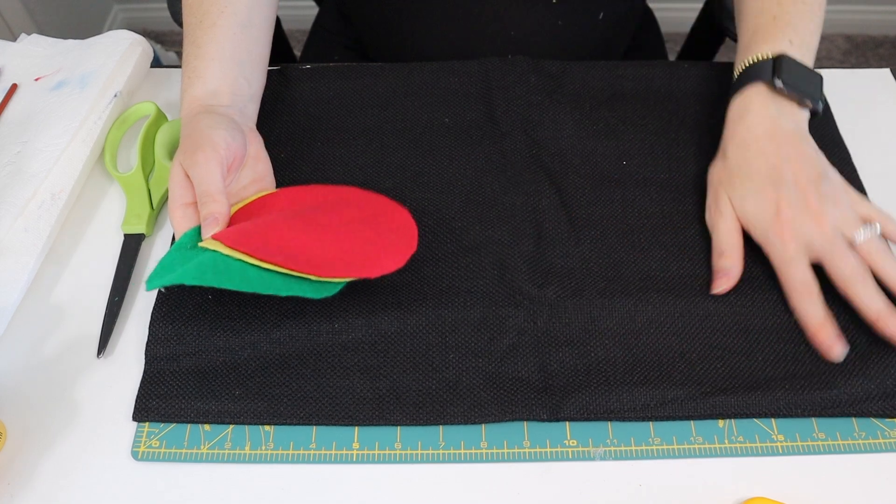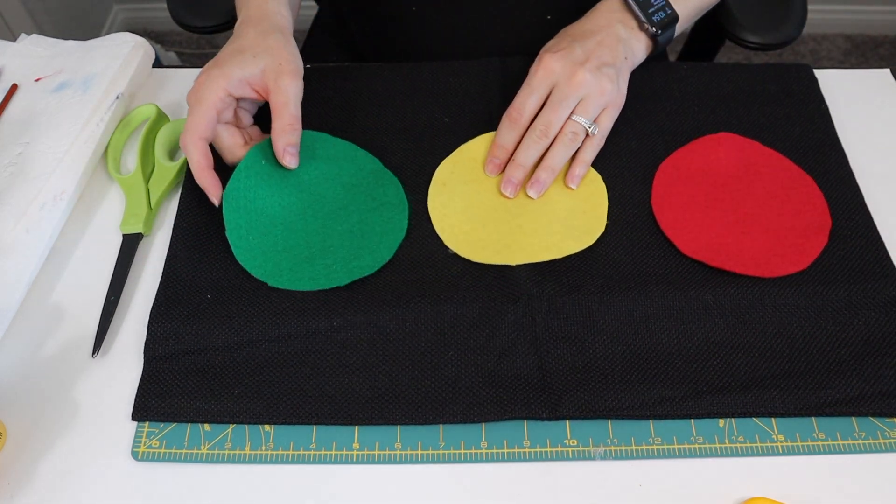Once we've got our felt circles cut out, I'm just going to place them on the pillow cover just to get the placement right.